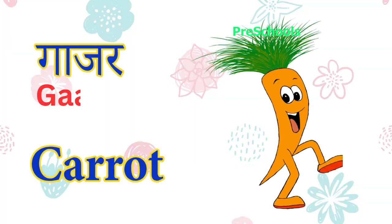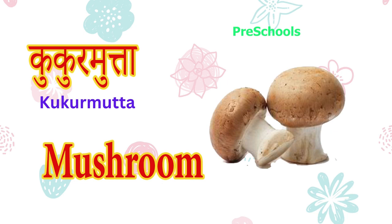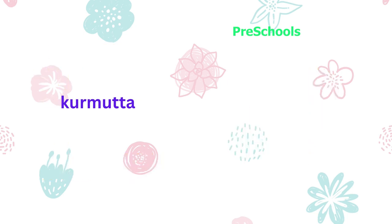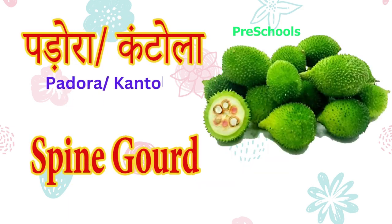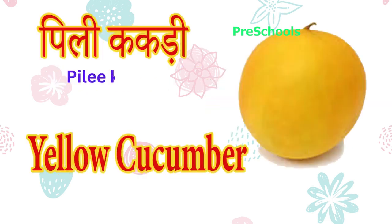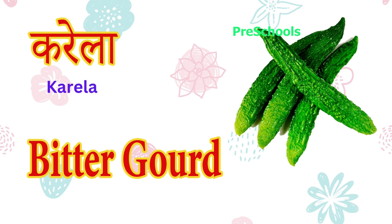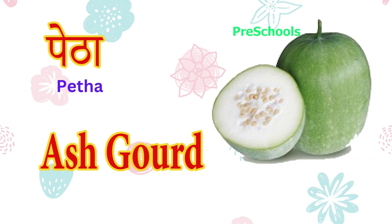Gazar — carrot. Kukur mutta — mushroom. Mirch — chili. Padora kandola — spine gourd. Philly kakadi — yellow cucumber. Karela — bitter gourd.